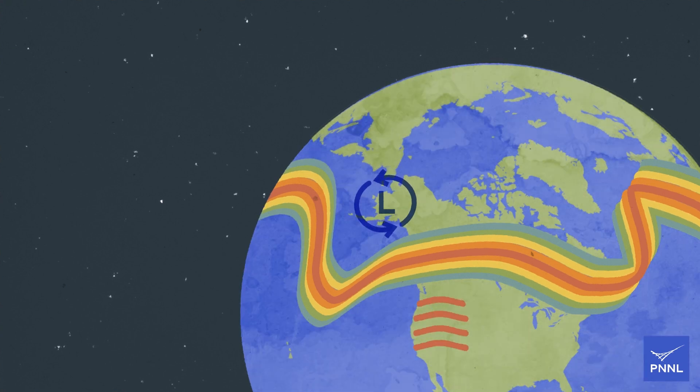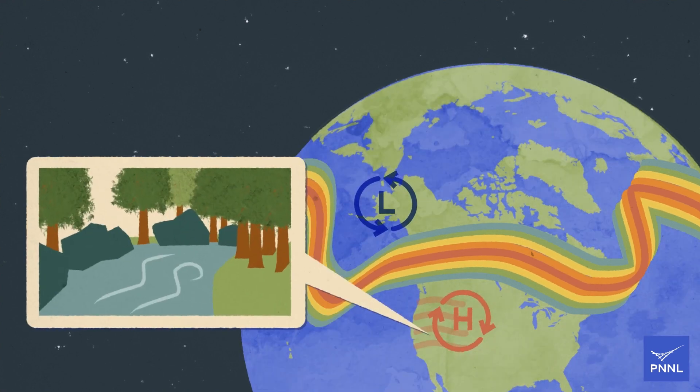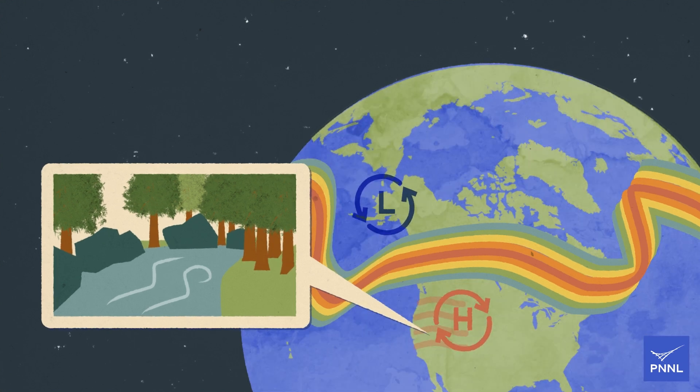The polar jet shift then gives rise to a second clockwise spinning vortex, this time above North America. Instead of cool, moist air, the western United States receives clear skies and dry conditions.